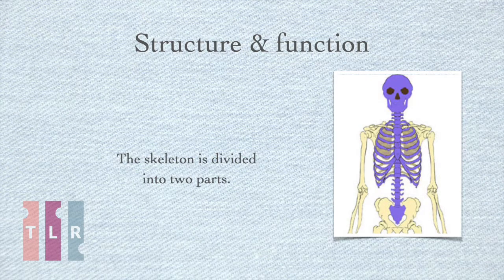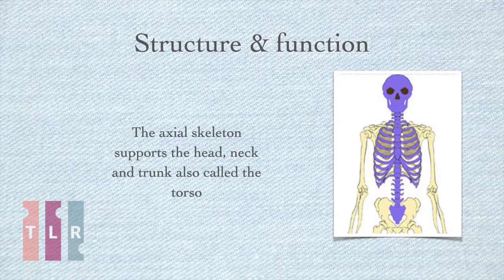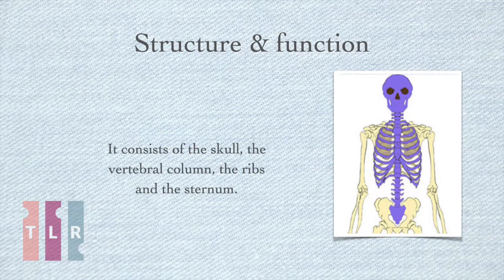The skeleton is divided into two parts. The axial skeleton supports the head, neck and trunk — also called the torso. It consists of the skull, the vertebral column, the ribs and the sternum.